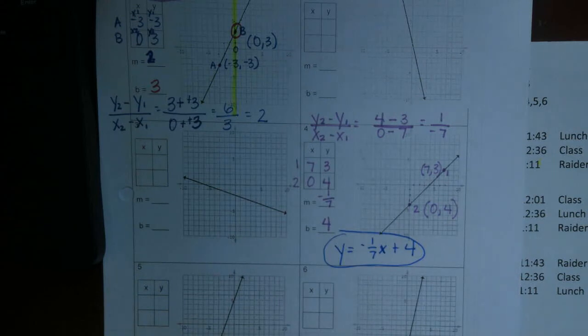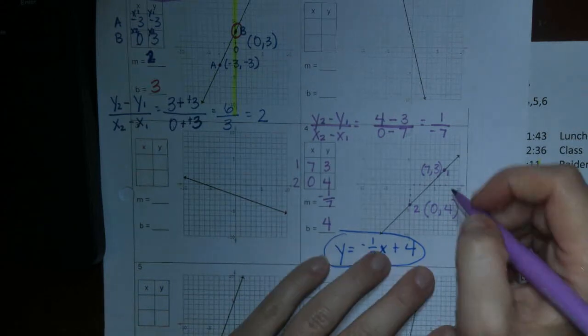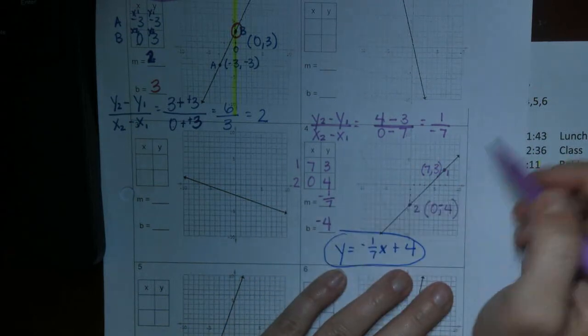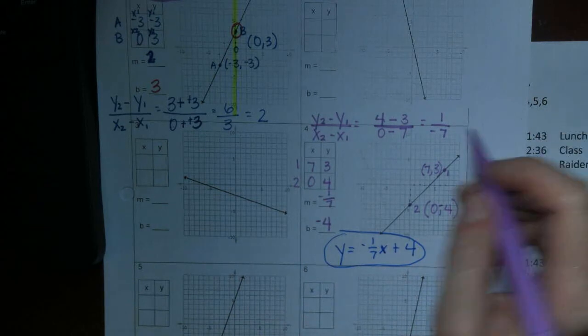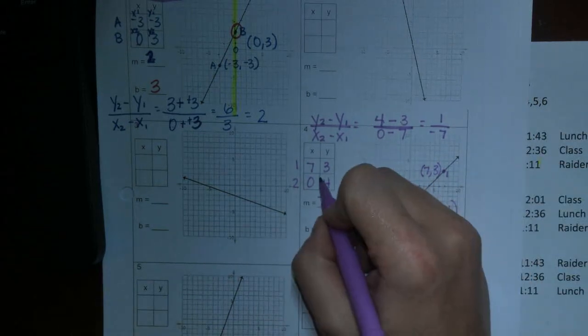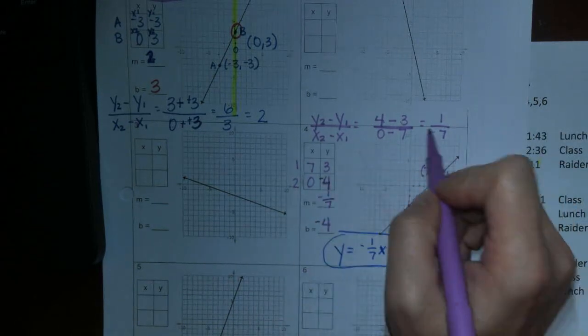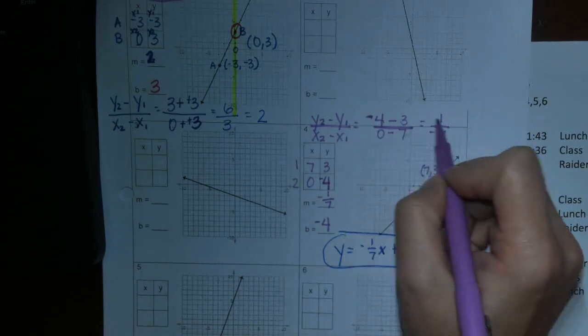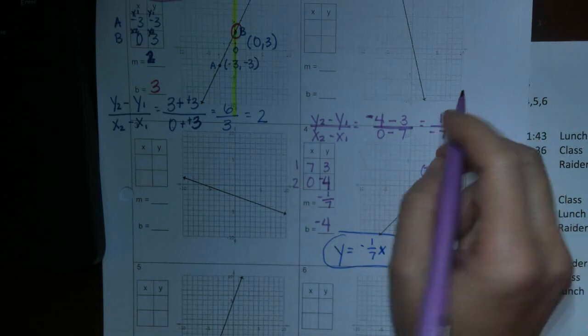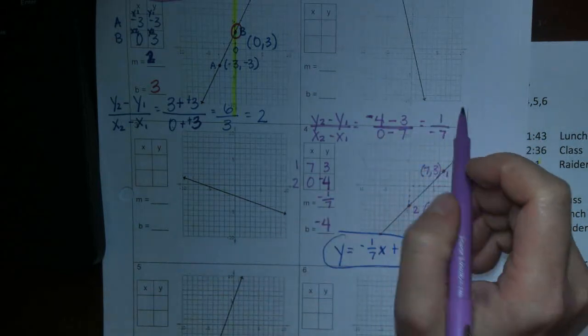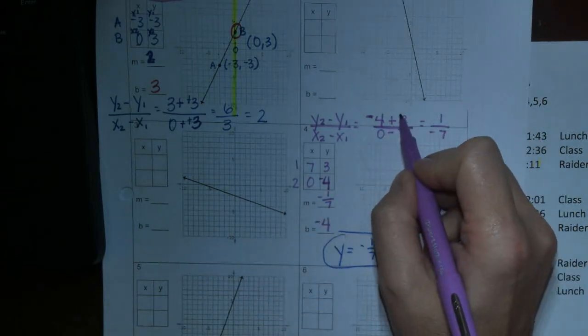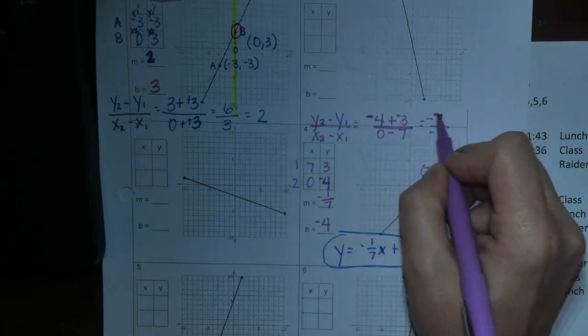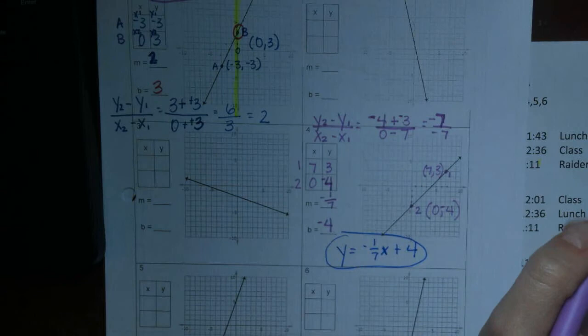And I just realized that I did something wrong. This is a negative 4. Your y was negative 4. So that should have been a negative. I hope you caught that. So this needs to change here. So up here, this negative, negative 4. Miss Hogg, seriously.